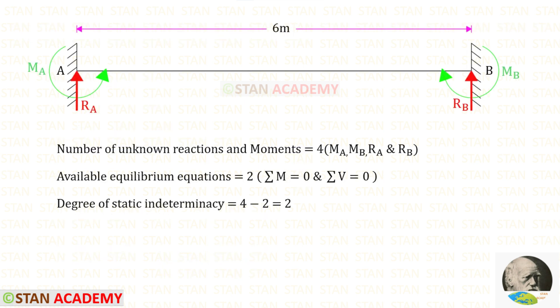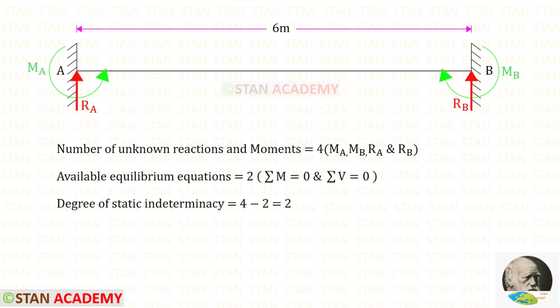Now let us find the degree of static indeterminacy. In this beam the number of unknown reactions and moments are 4. The available equilibrium equations are 2. The degree of static indeterminacy is equal to 4 minus 2, which gives us 2.